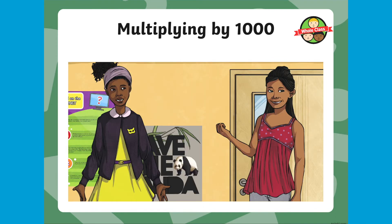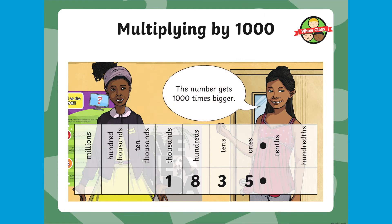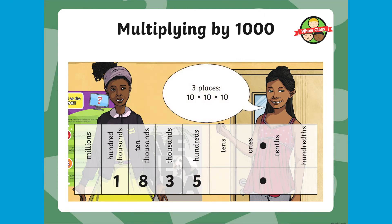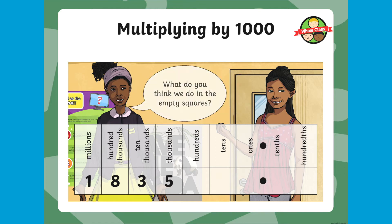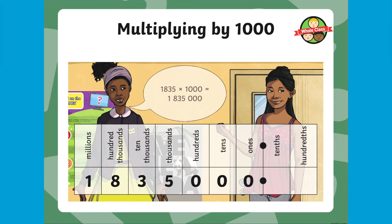Again, this is very similar to multiplying by 1000. So we start with 1,835. If we multiply by 1000, our number gets 1000 times bigger, so it moves three places over to the left, making it 1,835,000. There were three empty spaces this time, so we put three zeros in as placeholders.